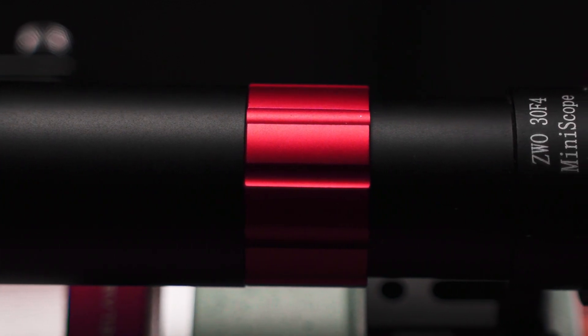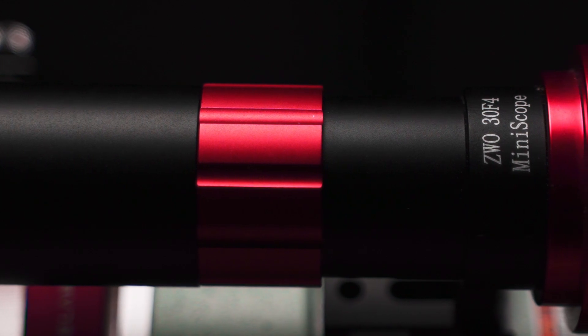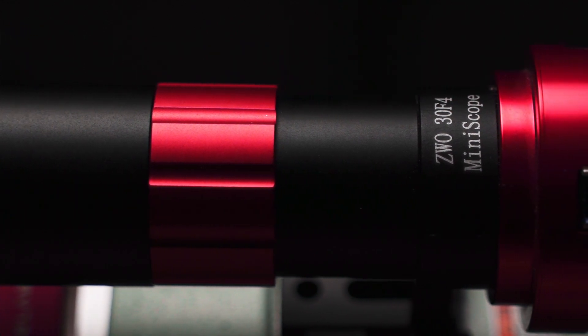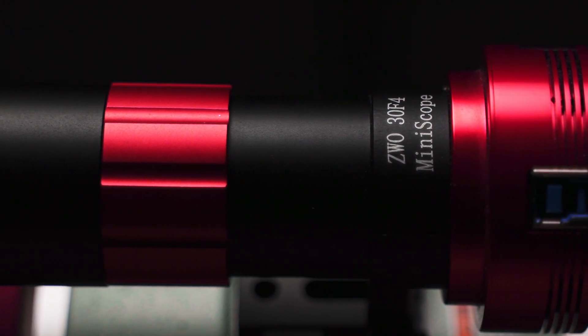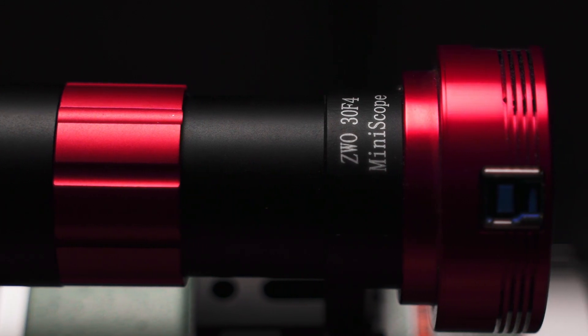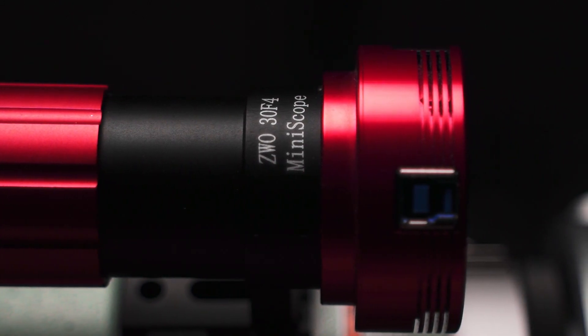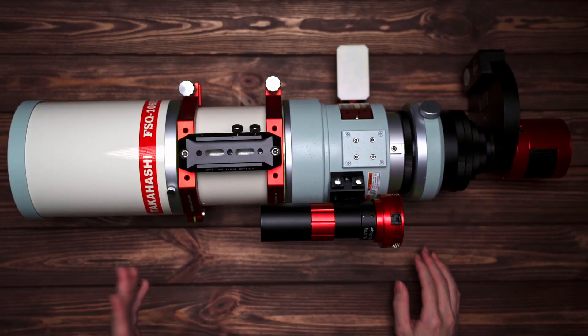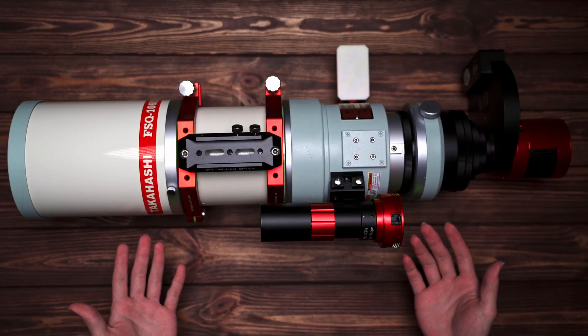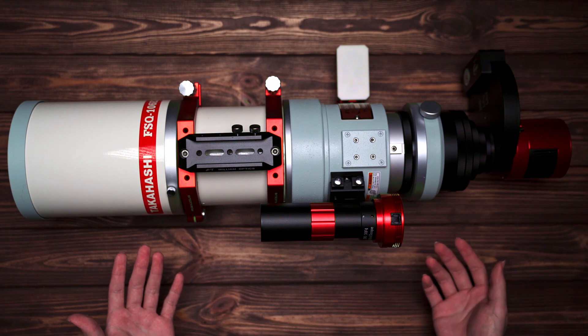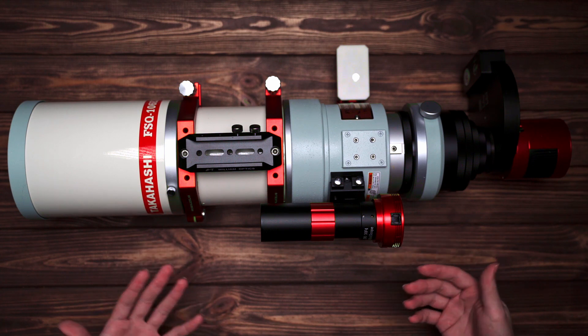But I use a 0.73 times focal reducer which makes the focal length of FSQ106 become 387mm. So the 120mm of the focal length of ZWO Mini Guide Scope works fine in this case. I will definitely switch to a longer guide scope when using the native focal length of FSQ106.